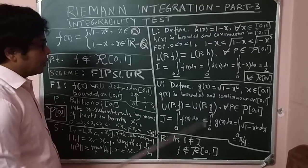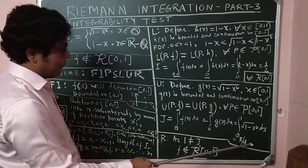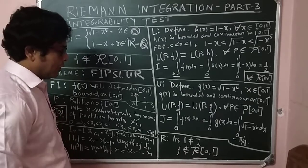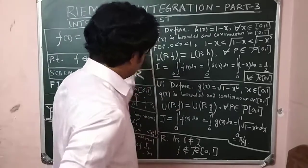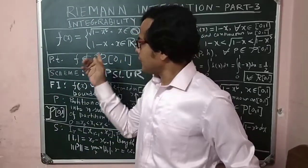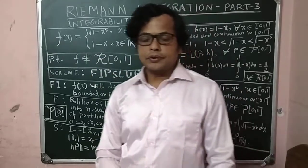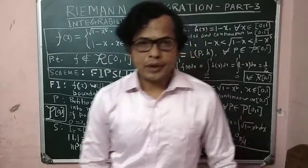In the R part, the Riemann integrability: as I ≠ J, this is 1/2 and this is π/4, f does not belong to R[0,1]. That is, f is not Riemann integrable. We have finished the solution of this example. Thank you.